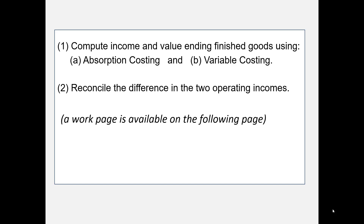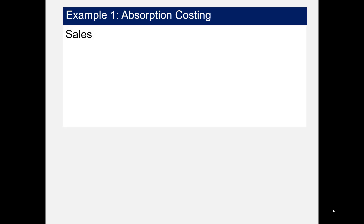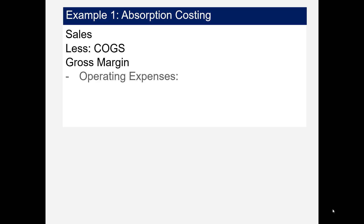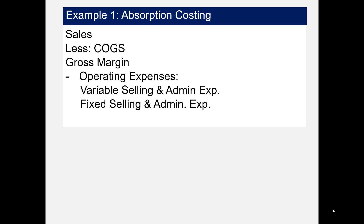We'll start on the page provided, and there is another page to continue on. Let's prepare the absorption costing income statement. The first thing to know about absorption costing is that the income statement format is the traditional format: sales minus cost of goods sold equals gross margin, minus operating expenses, giving us net operating income.